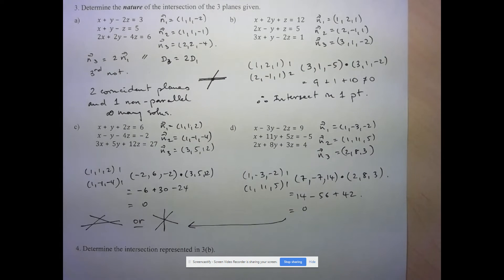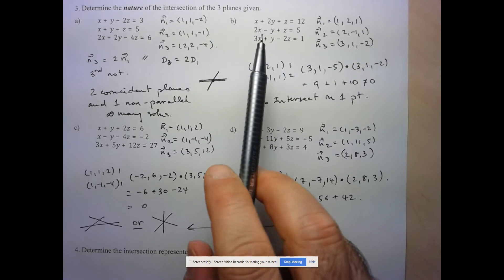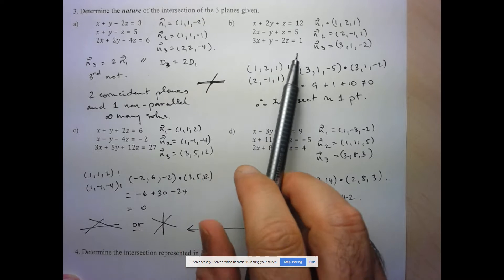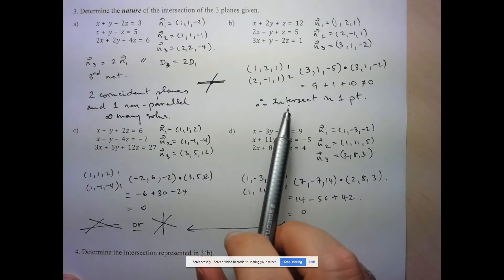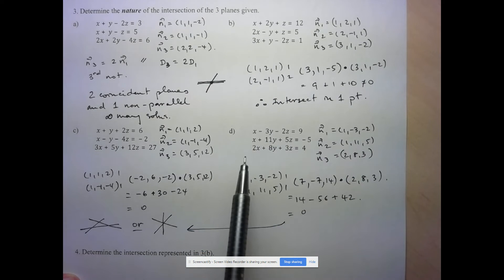Hi folks, welcome to the third and final video for the Unit 7 Lesson 4. So what they ask us to do in number 4 here is to actually determine the intersection of the three planes in B. We've already established that there should be one point of intersection.